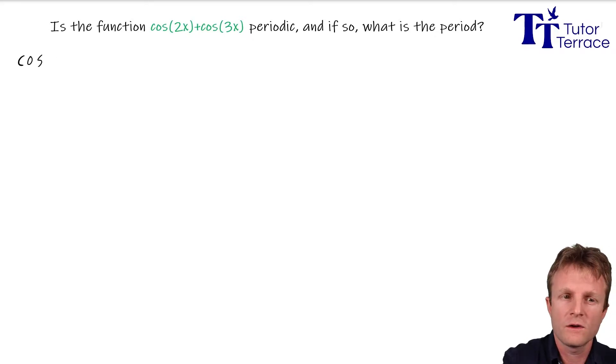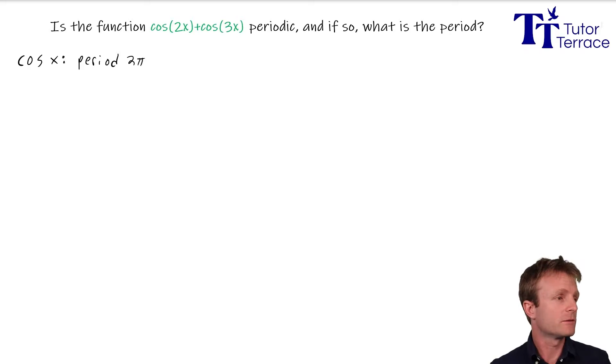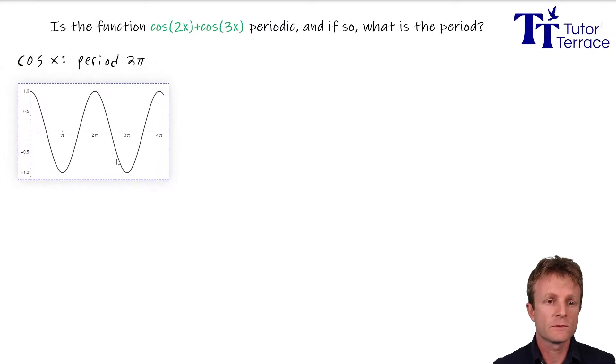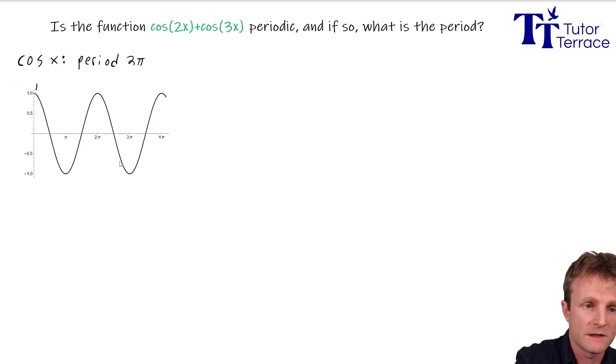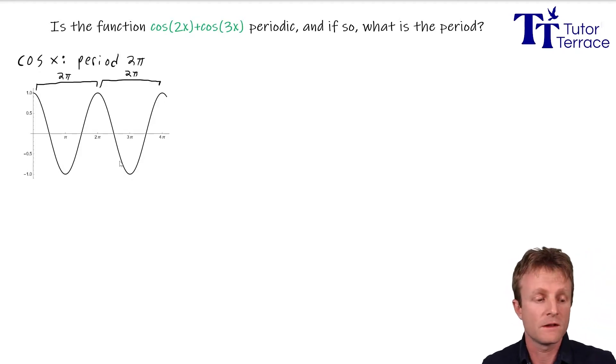Let's start by remembering how cosine works. Cosine x is a periodic function, and it has period 2π. It just wiggles between minus 1 and 1, and does that every 2π. So here's what the cosine function looks like. And we can draw on here the period, just to make it very visual. 2π, 2π. And it repeats every 2π all the way to the left and all the way to the right.